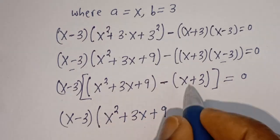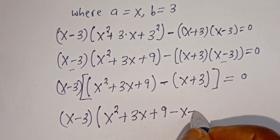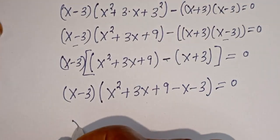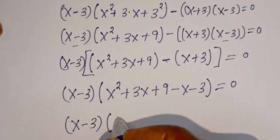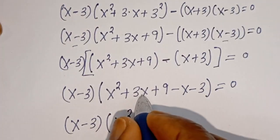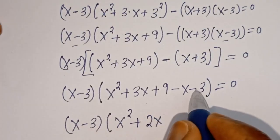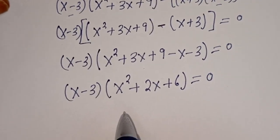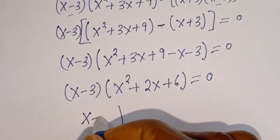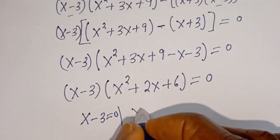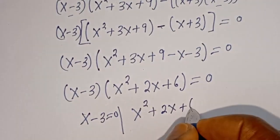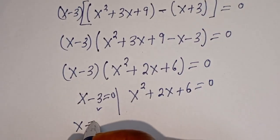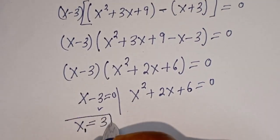Then if you multiply through, this minus by S gives minus S, and this minus by plus 3 gives minus 3, equal to 0. So S minus 3 equal to 0, giving us S equal to 3. Let's call this S1 — this is the first value of S.